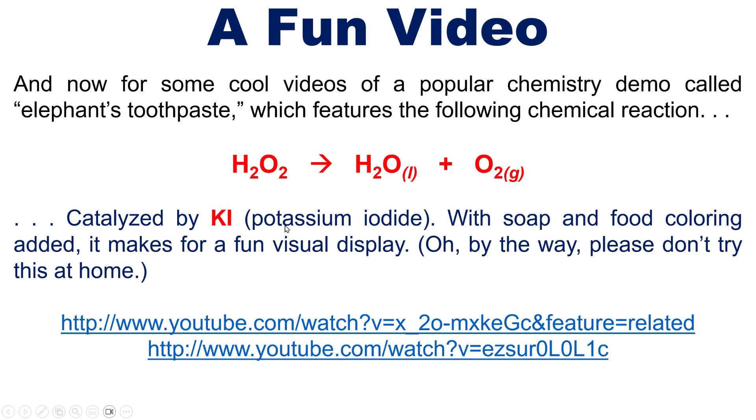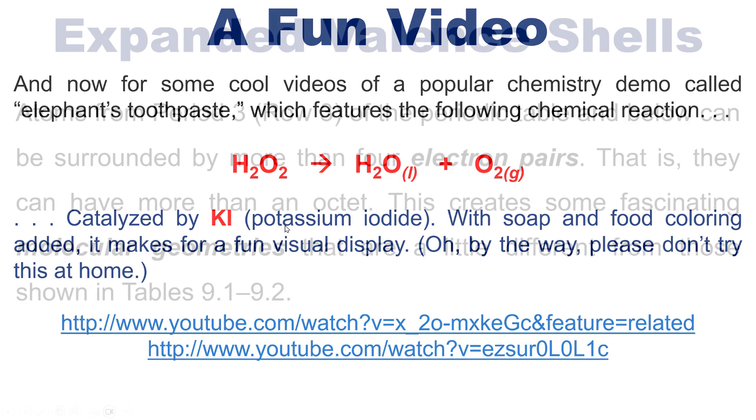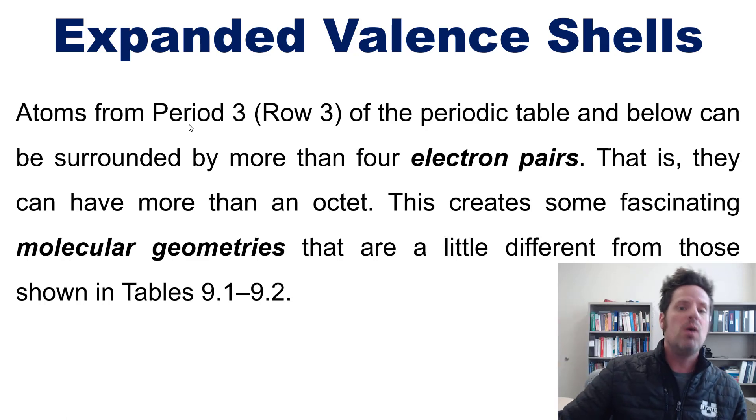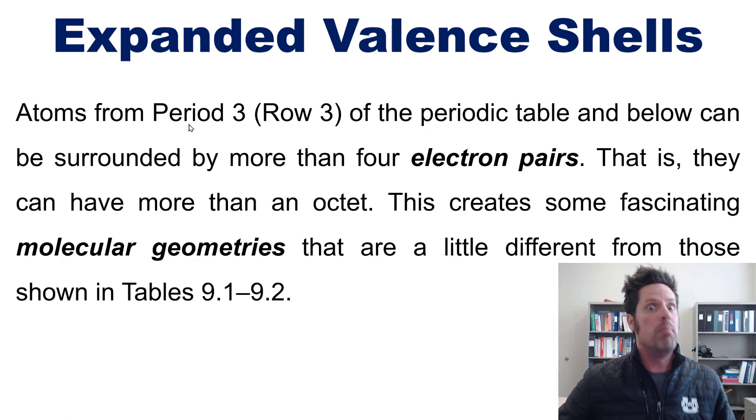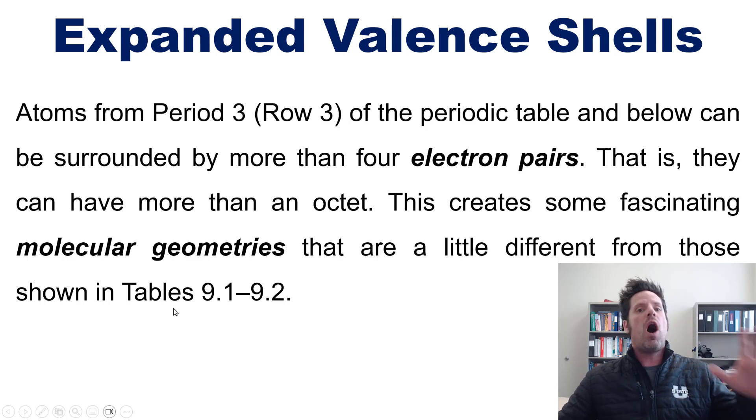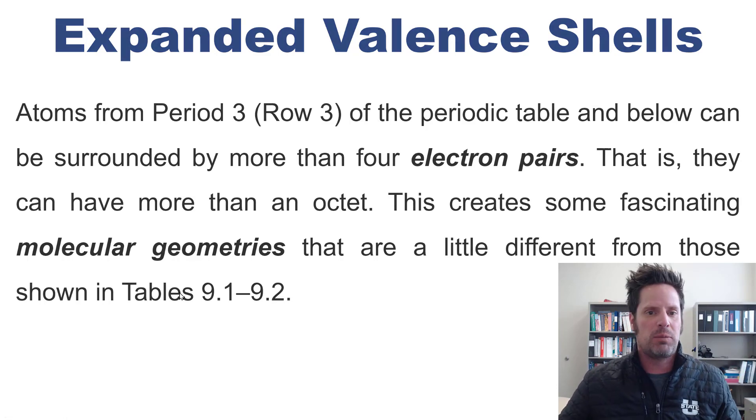Alright, so continuing from what we discussed in our previous video that's gonna be linked to somewhere, atoms from period 3, that is row 3 of the periodic table and below, actually can be surrounded by more than four electron pairs. That is, they can have more than an octet of electrons sometimes. Now this creates some fascinating molecular geometries that are a little different from the standard ones shown in tables 9.1 and 9.2 of our textbook that is referenced in the description below.